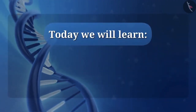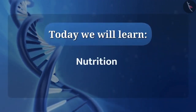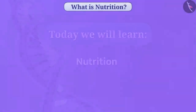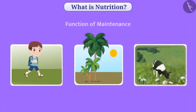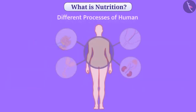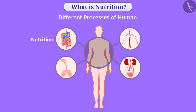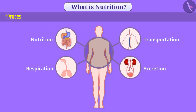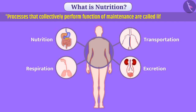Today we will learn about nutrition. In living beings, the function of maintenance should be carried out continuously so that they can remain alive. For this function, different processes like nutrition, respiration, transportation, and excretion work collectively. Processes that collectively perform the function of maintenance are called life processes. In this video, we will get information about nutrition.